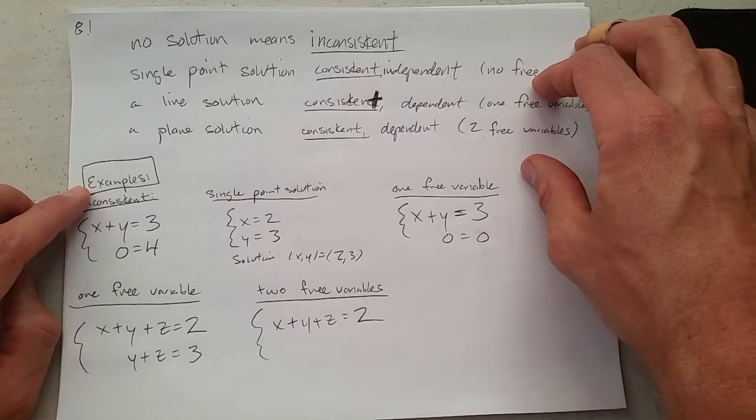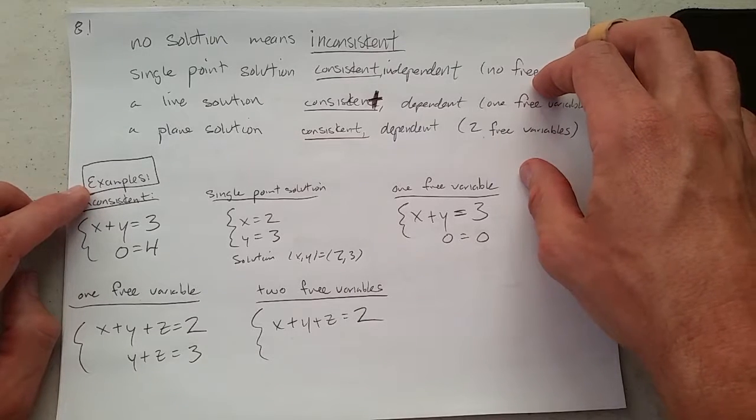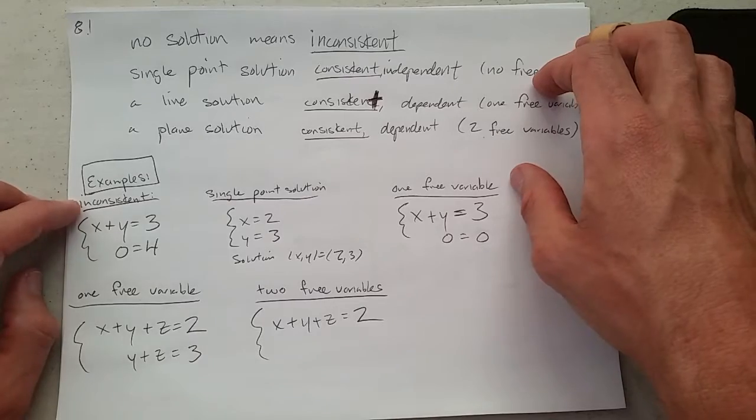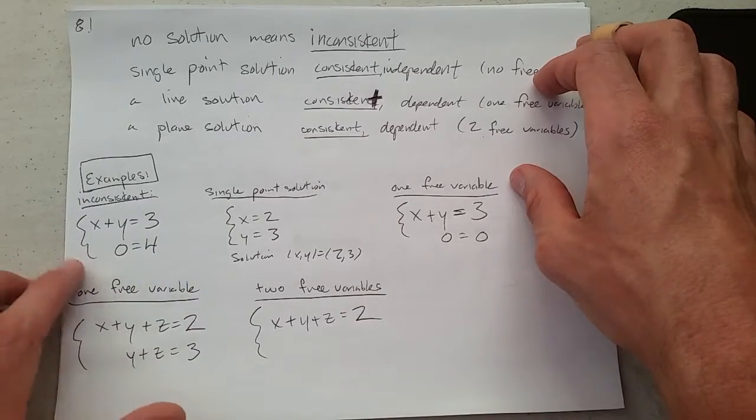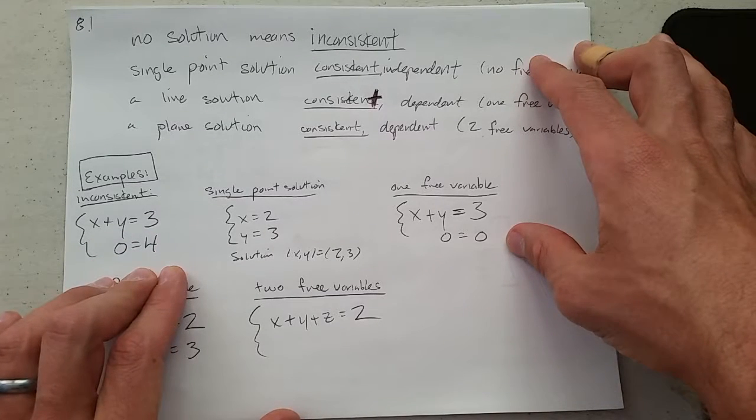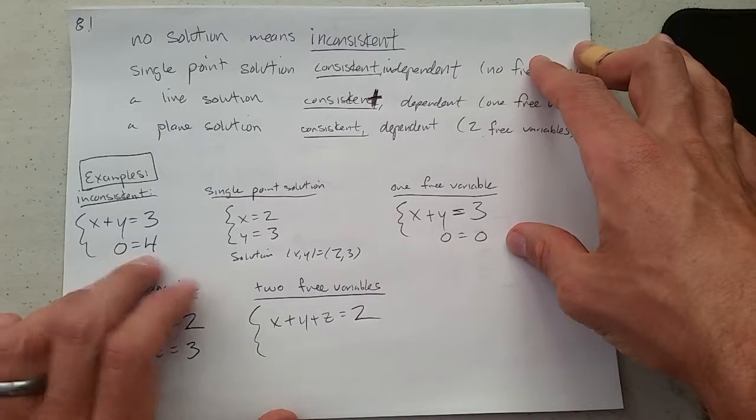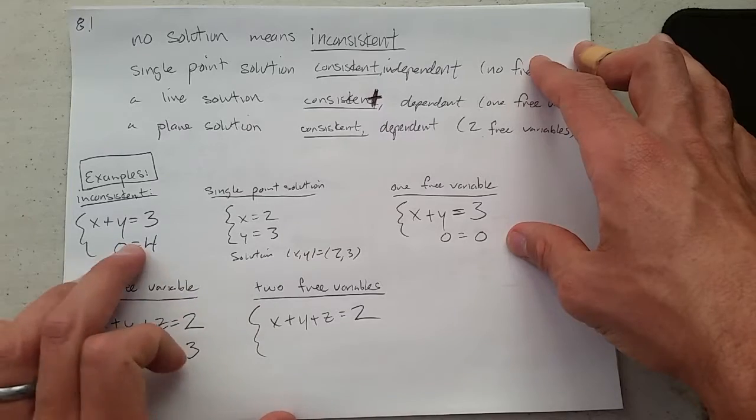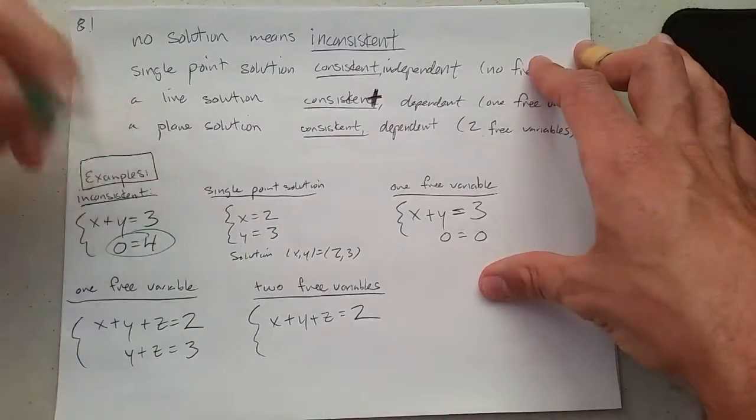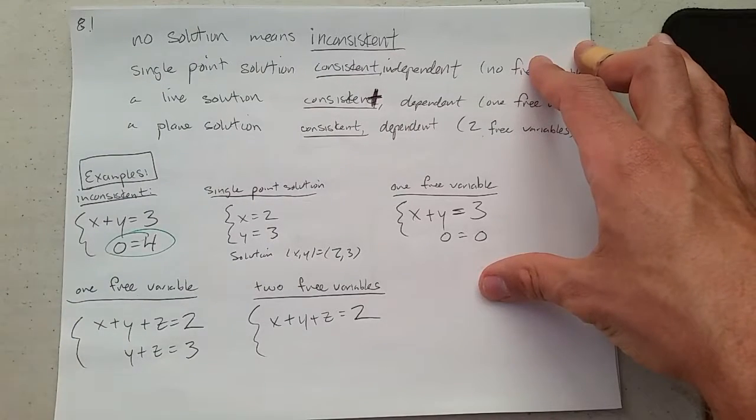So here are some examples of systems that are in a very nice, easy to read form. What does inconsistent look like? Here's a system: X plus Y equals 3, that looks totally fine. 0 equals 4, that's not fine. There is no XY value that makes 0 equal 4. So right there, that second equation is what makes it inconsistent.